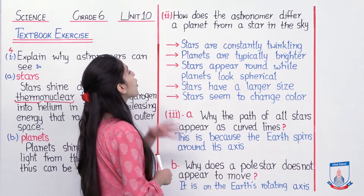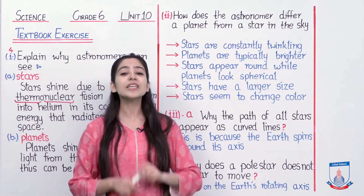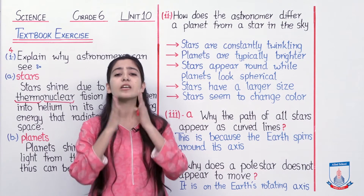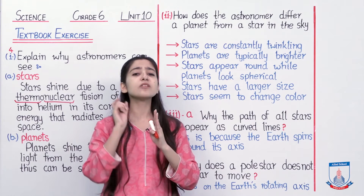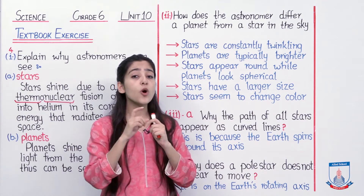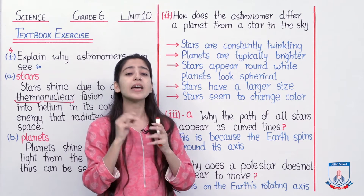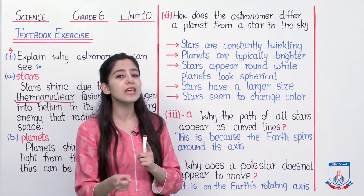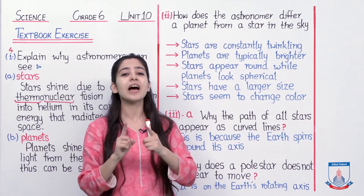Number first is: stars are constantly twinkling. Aapne kabhi suni hogi — twinkle, twinkle, little star. Woh isi liye kyunke star jo hai, woh jagmagati hai, twinkle karti hai, woh ek shape mein nahi rehti. Jaisa aapne dekha ke koi planet hoga, woh aapko nazar aayega bilkul ek constant shine ke saath — aisa nahi hai ki uski shining ki intensity kam ho jaaye aur zyada ho jaaye. Agar aap kisi telescope se ghor se dekhen toh aapko nazar aayega ke jo star hai woh jagmaga raha hai, twinkle kar raha hai, kabhi uski light dim ho rahi hai, kabhi zyada ho rahi hai. That is what happens with star, magar yeh planet mein nahi hota. To aapko yahan se pata chal sakta hai that the twinkling thing is star, aur jo twinkle nahi kar raha, that is a planet.